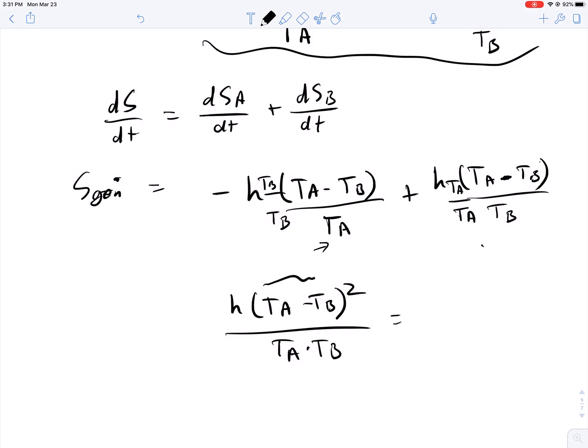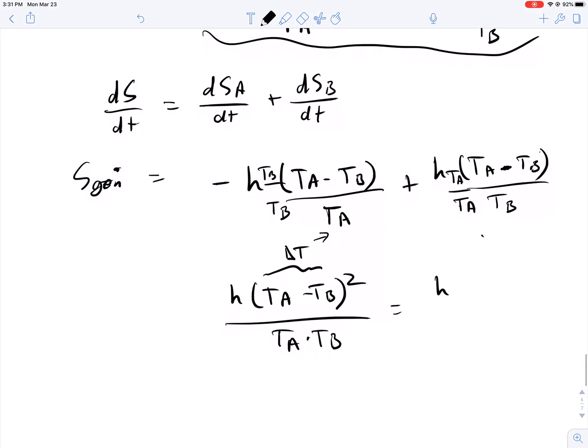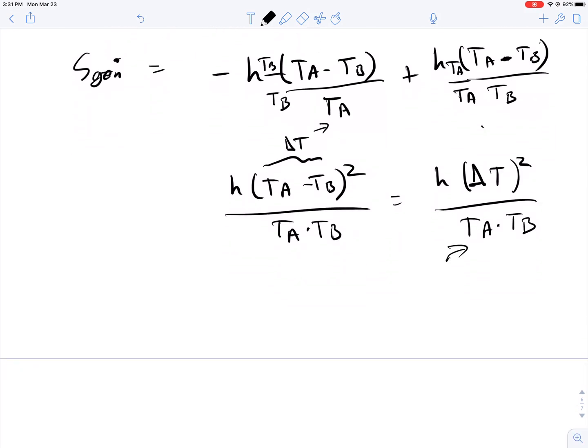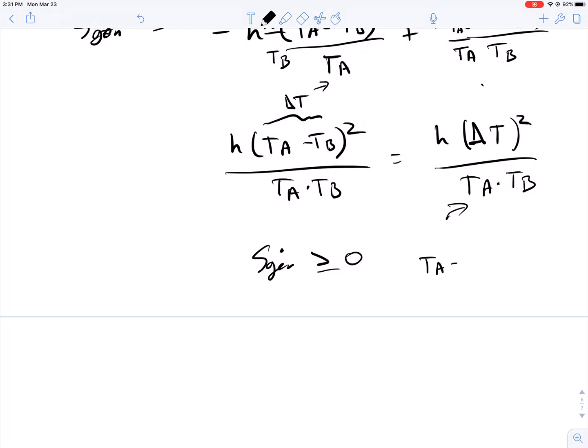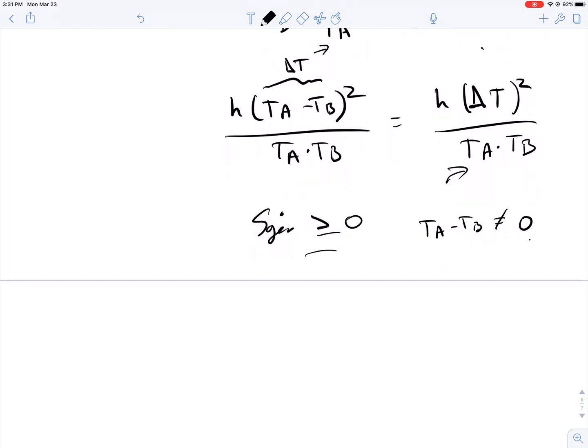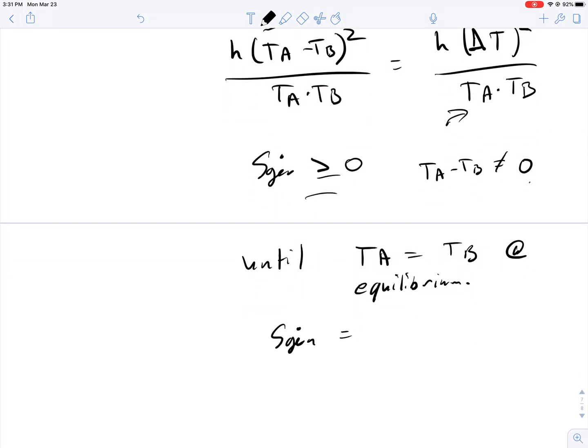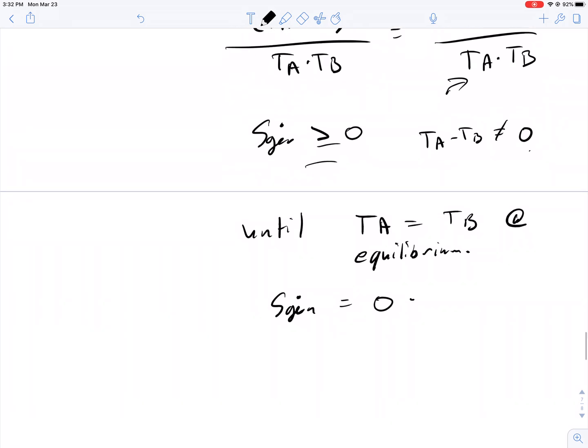Which, if we define this term as the temperature difference between the two halves, we have H times delta temperature squared, over TA times TB. Note, for any temperature, SGEN meets the definition of being greater than or equal to zero. So, if for any temperature difference, TA minus TB not equal to zero, then SGEN will be positive until TA equals TB at equilibrium, at which point SGEN will be equal to zero. So, all of the properties that we've looked at for entropy so far are met.